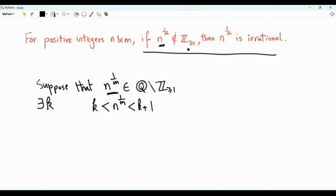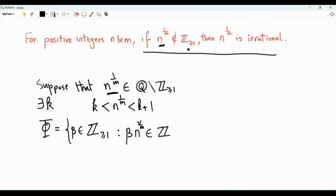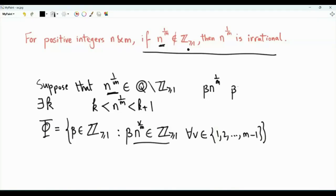Let's define the set phi. This is the set that contains the positive integers beta such that beta times n to the power v over m is a positive integer. And what is v? This statement must be true for every v that is in the set from 1 all the way to m minus 1. So set phi is the set of positive integers such that beta times n to the power 1 over m, beta times n to the power 2 over m, all the way to beta times n to the power m minus 1 over m — all those must be positive integers.